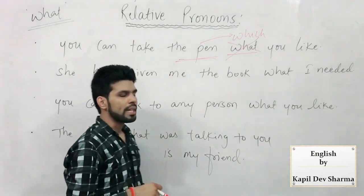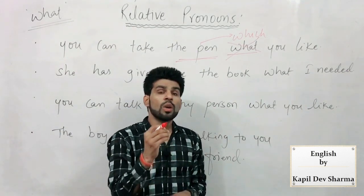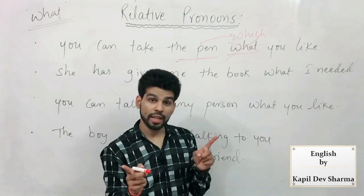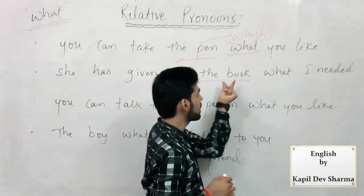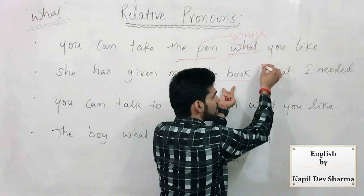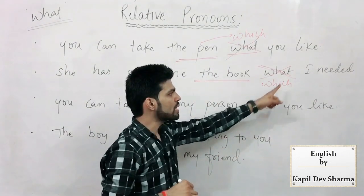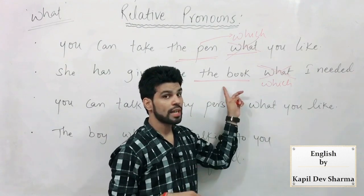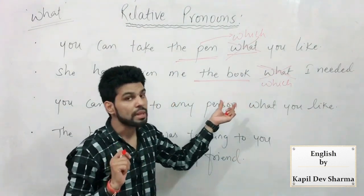'She has given me the book — what I needed' — usne mujhe woh kitaab di hai — kya mujhe zaroorat thi? Yeh sounds weird. 'Usne mujhe woh kitaab di jis ki mujhe zaroorat thi' — not 'kya mujhe zaroorat thi'. Chunki yahaan antecedent hai — 'the book' — isliye what ka istamal mat kijiye. Aap uske liye 'which' ka hi istamal kijiye — 'she has given me the book which I needed' — or 'that I needed'. What ke paas antecedent nahi hota, aur yahaan antecedent maujood hai.